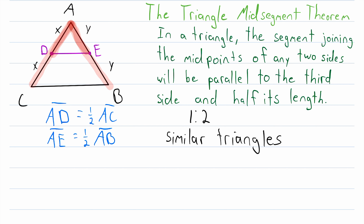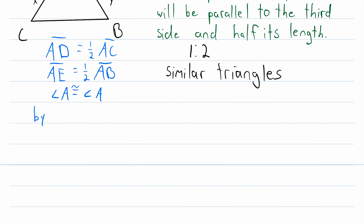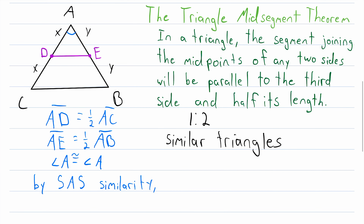If we could show that the included angles of these sides in the two triangles are congruent, we could use the side-angle-side similarity postulate to conclude that the triangles are similar. What's the included angle of the sides AD and AE? That would be angle A. What is the included angle of the sides AC and AB? That is also the very same angle A. So, by the reflexive property of congruence, angle A is congruent to angle A. Therefore, by the side-angle-side similarity postulate, triangle AED is similar to triangle ABC.